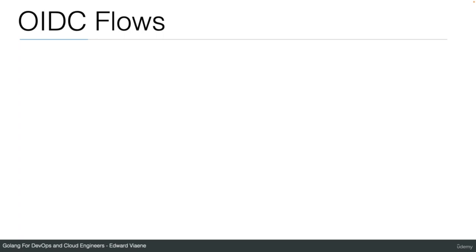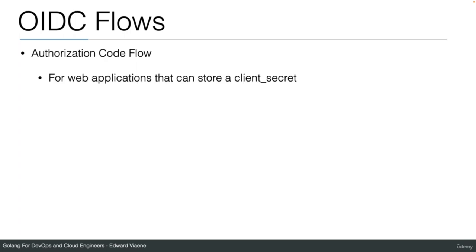There are different OIDC flows you can implement. The authorization code flow is the one we're going to implement in our demo — it's for web applications that can store a client secret. A backend application can store a client secret without the client knowing because the code is parsed in the backend, not visible on the frontend.